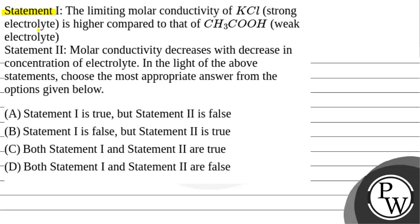Hello Bachcho, let's read this question. Statement 1 is given to us: the limiting molar conductivity of KCl, which is a strong electrolyte, is higher compared to that of CH3COOH, which is a weak electrolyte. Statement 2 is given to us: molar conductivity decreases with decrease in concentration of electrolyte. We have to choose the most appropriate answer. Option 1: Statement 1 is true but Statement 2 is false. Option 2: Statement 1 is false but Statement 2 is true. Option 3: both Statement 1 and 2 are true. Option 4: both Statement 1 and 2 are false.